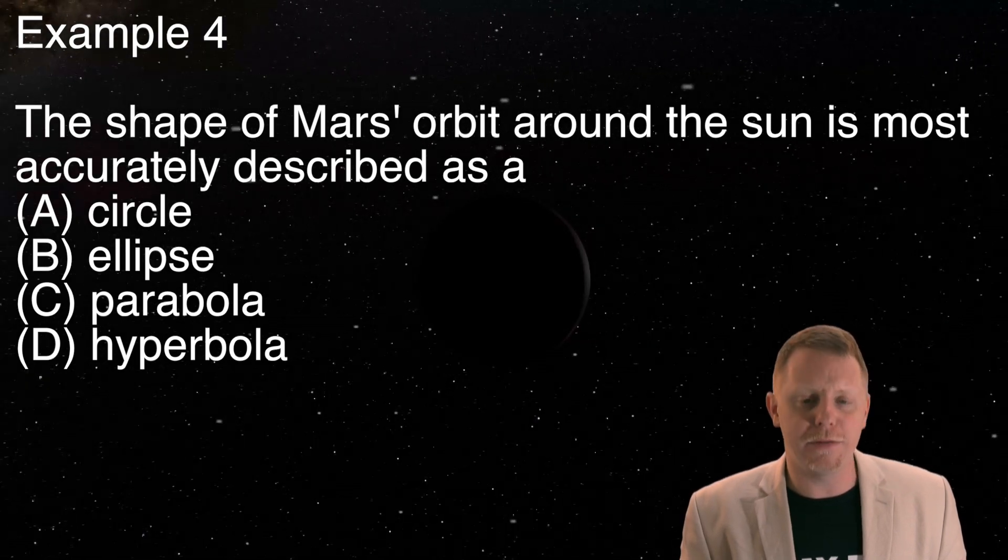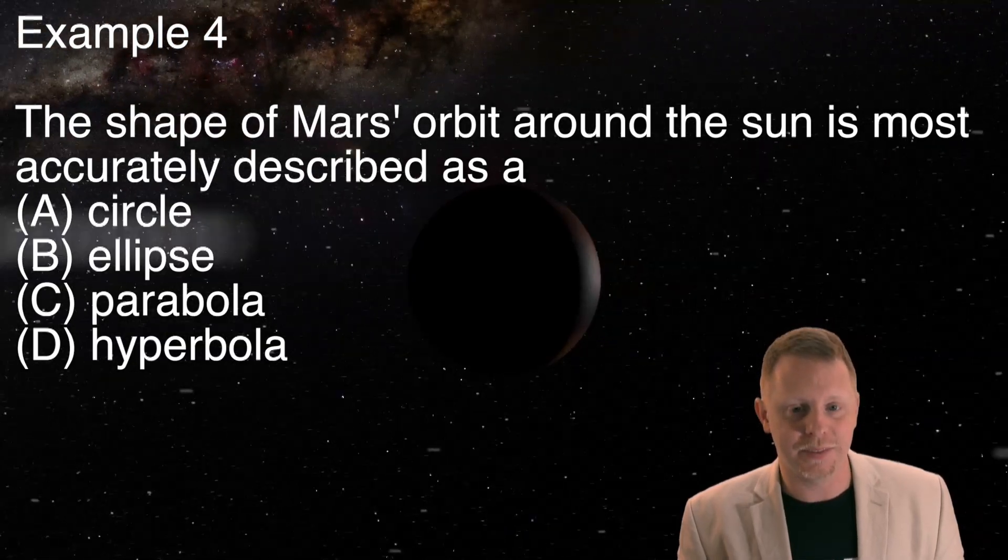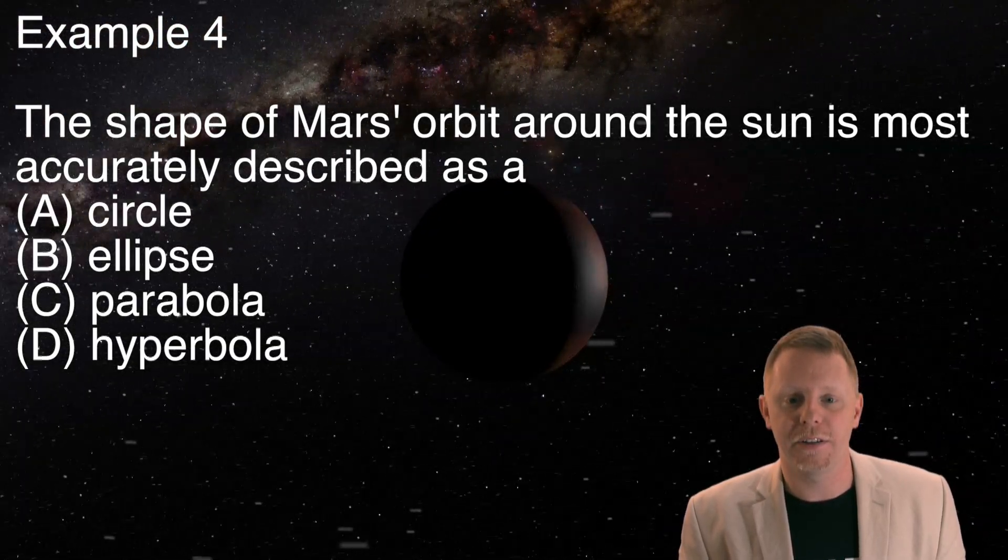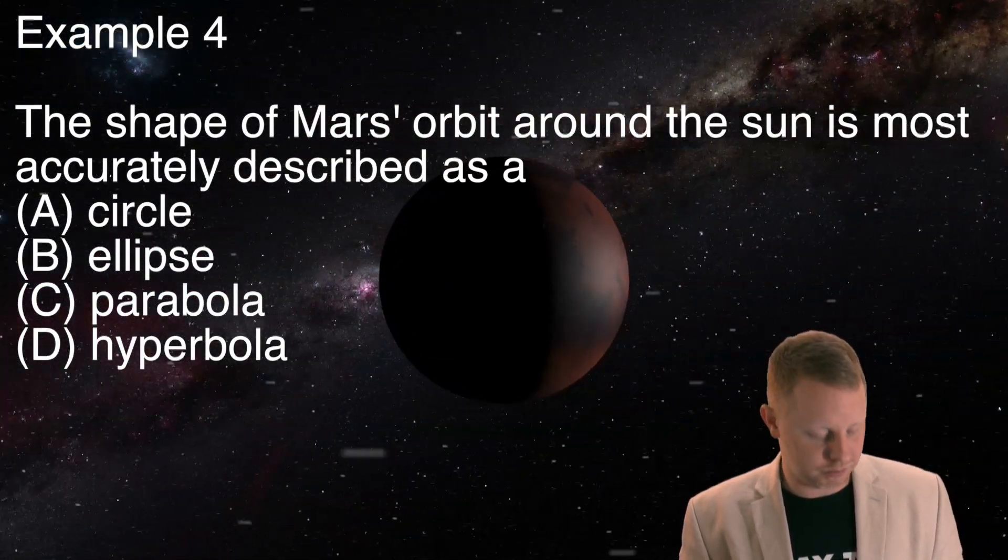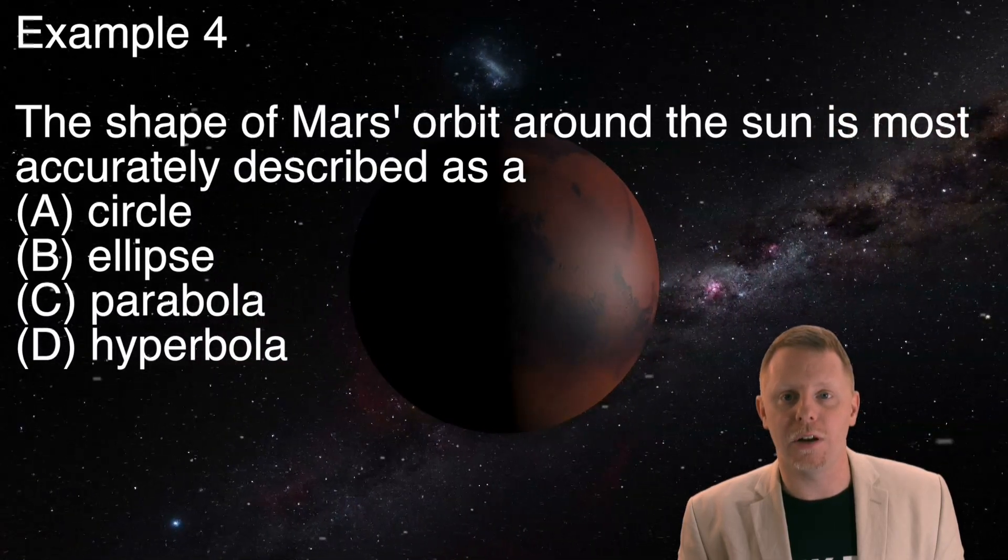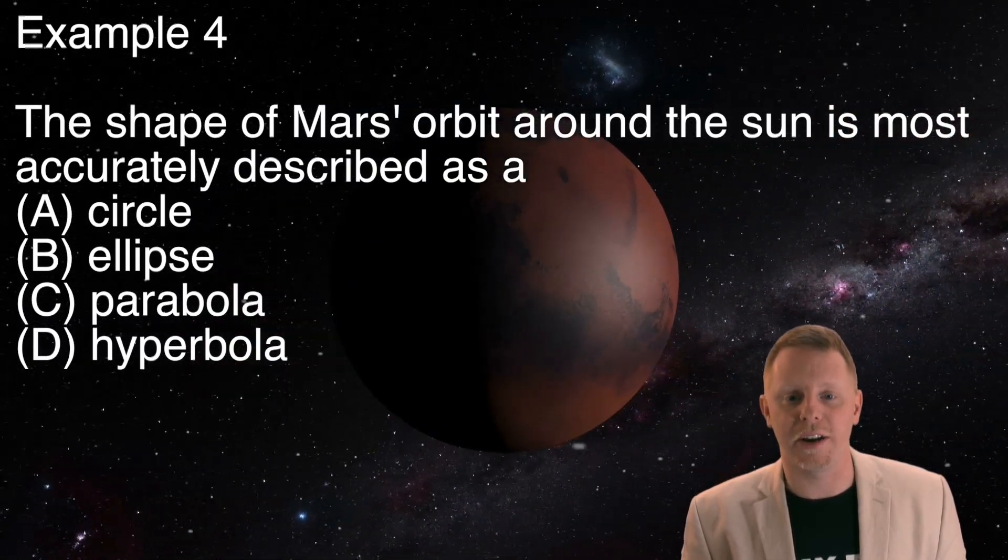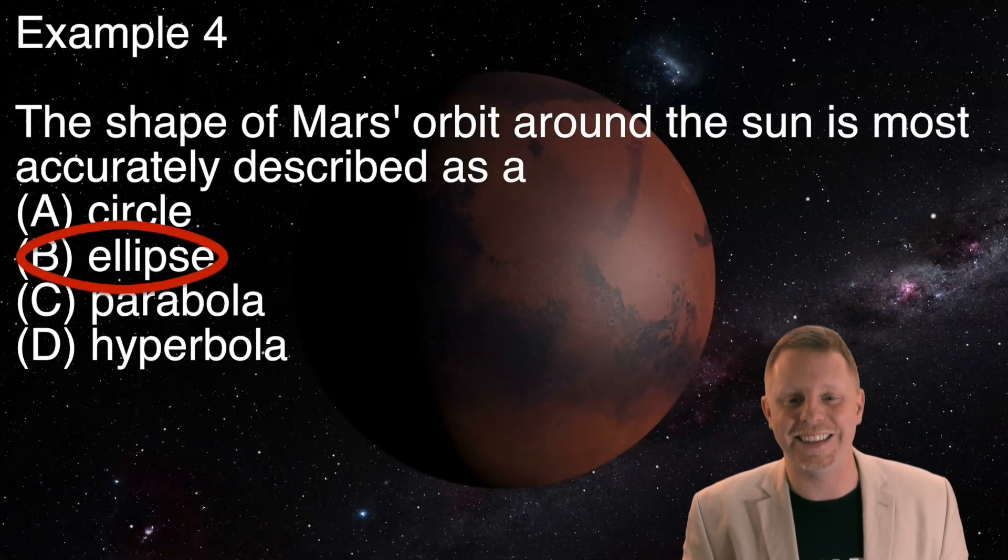The shape of Mars's orbit around the sun is most accurately described as a, in our choices, circle, ellipse, parabola, or hyperbola. Hmm. Remember the first law. The orbits of the planets are ellipses. They may be close to circles, but they're actually ellipses.